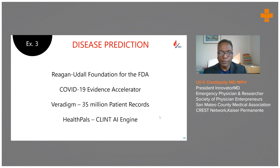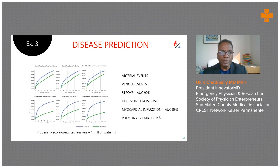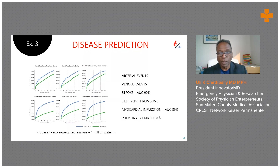The outcomes being tracked include stroke, deep vein thrombosis, myocardial infarction, and pulmonary embolism. The model is pretty accurate at predicting which patients will experience these outcomes.